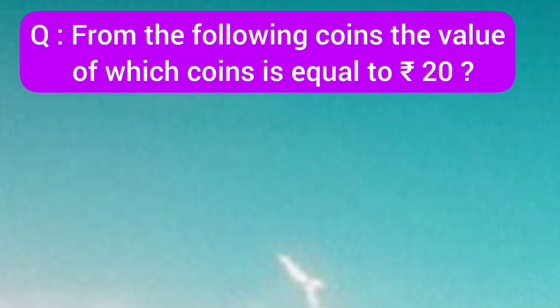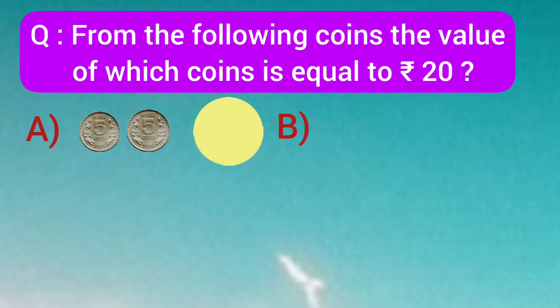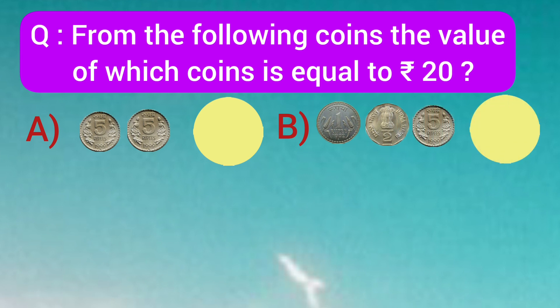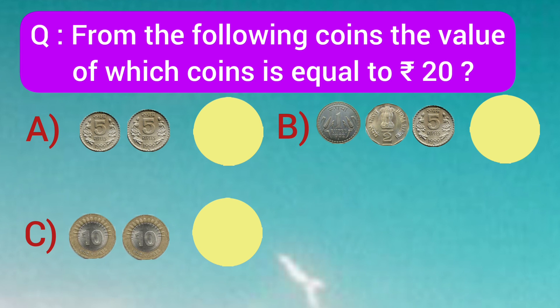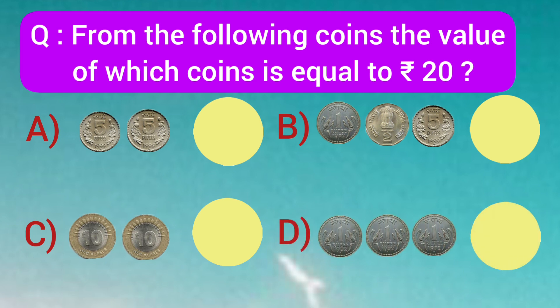Now it's time for a question. The question is: from the following coins, the value of which coins is equal to a 20 rupee note? In option A, we have 2 coins of 5 rupee. In option B, we have a 1 rupee, 2 rupee and 5 rupee coin. In option C, we have 2 ten-rupee coins. In option D, we have 3 one-rupee coins. Option C is the correct answer, as 2 ten-rupee coins are equal to 20 rupees.